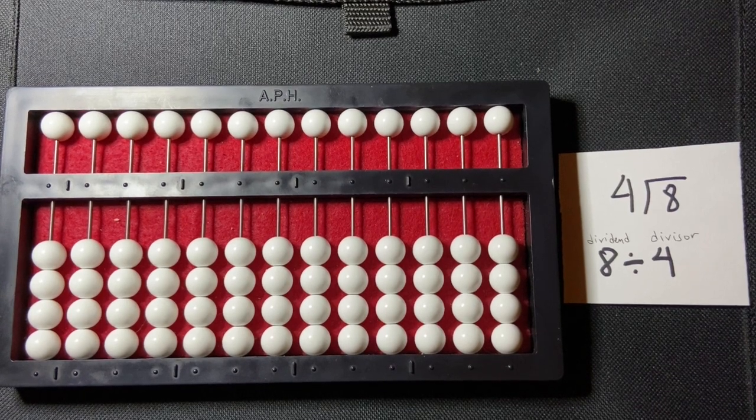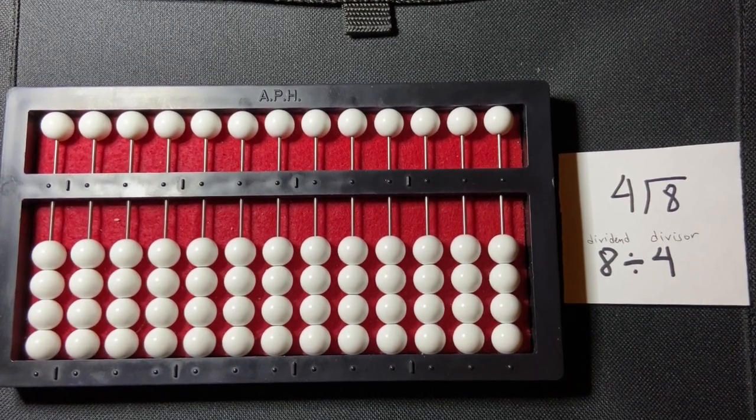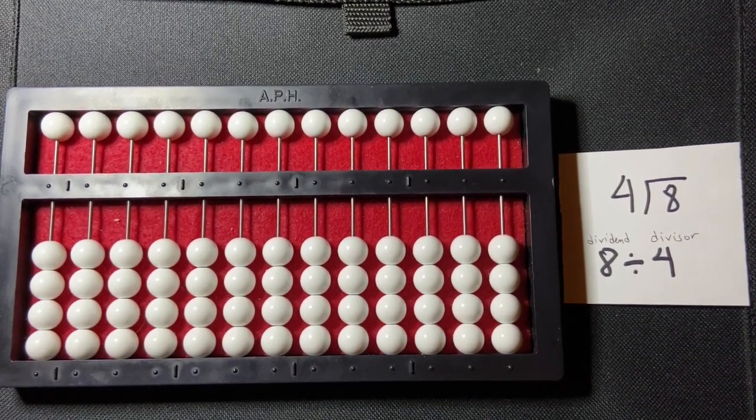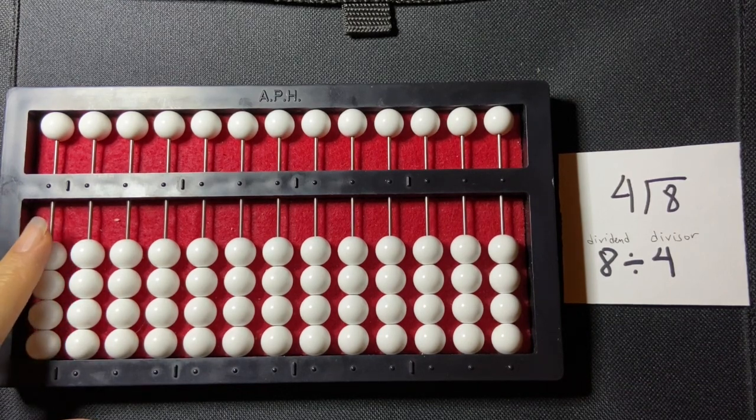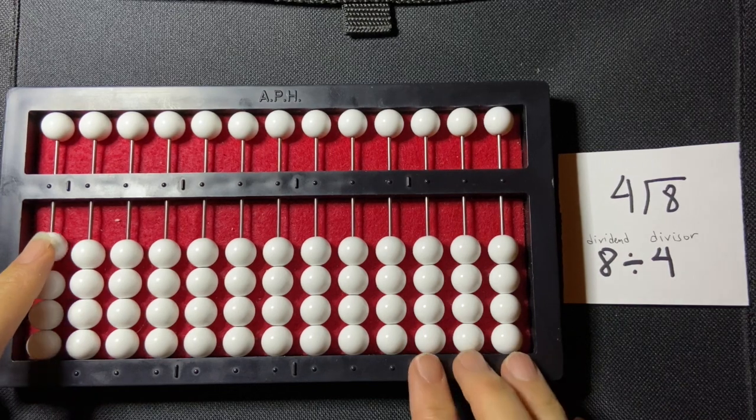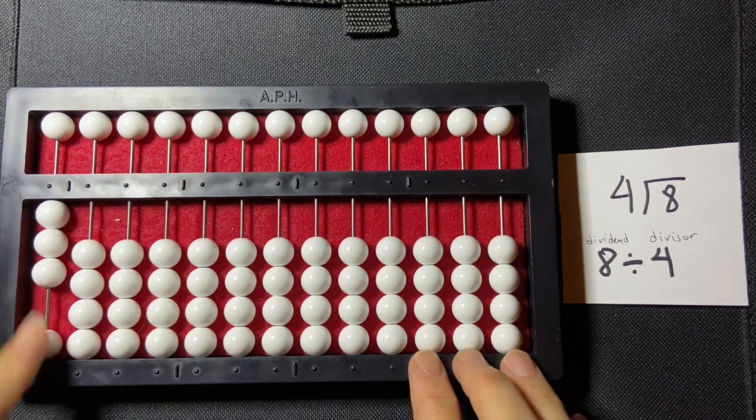I'm going to be doing a counting method division using a one-digit divisor and a one-digit dividend. I'm going to start by setting my divisor in the far left-hand side of my abacus, and that's four. One, two, three, four.